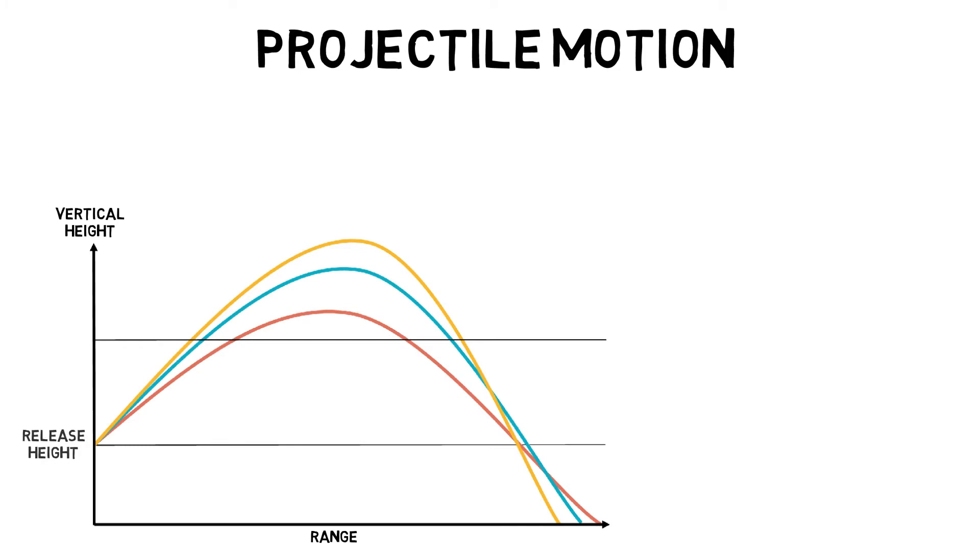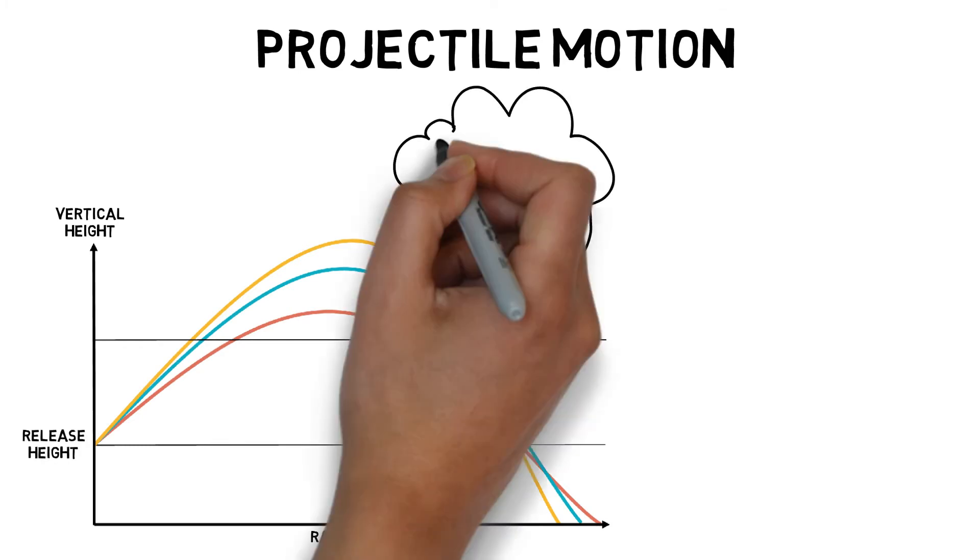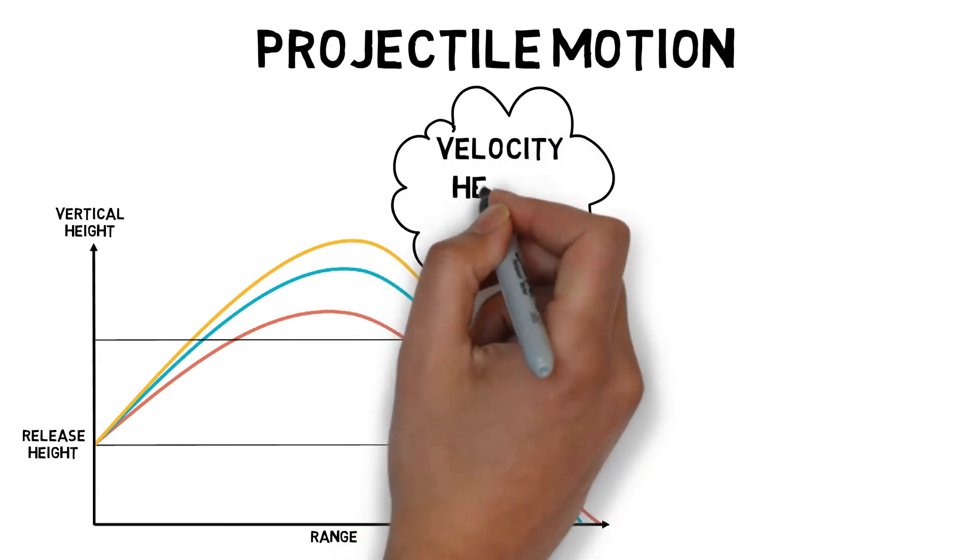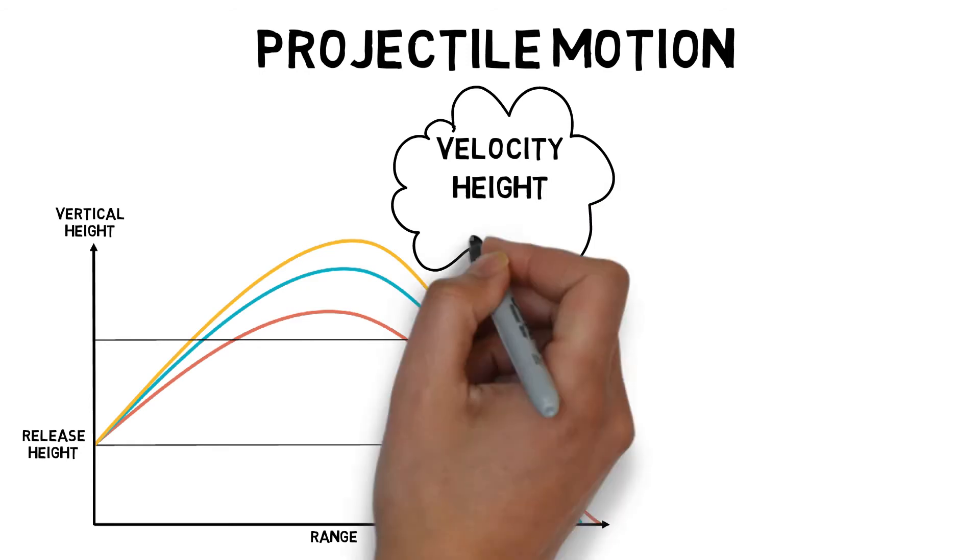The flight path of a projectile is dependent on three things: the velocity of release, height of release, and angle of release.